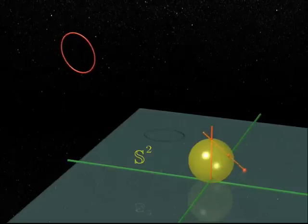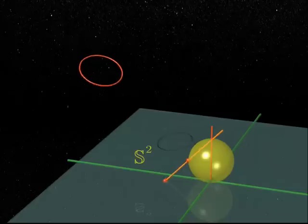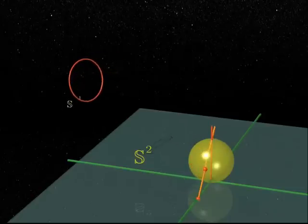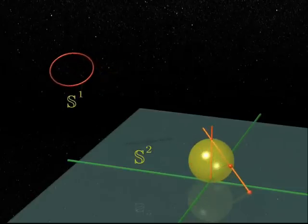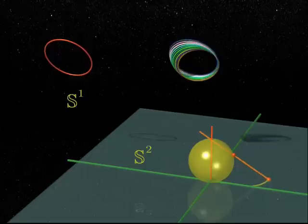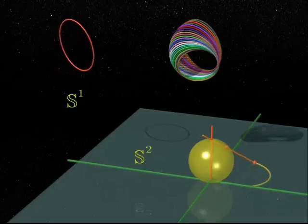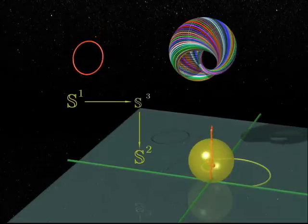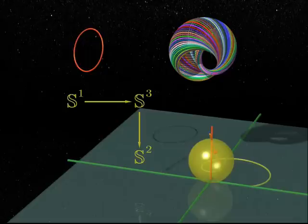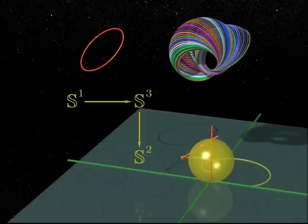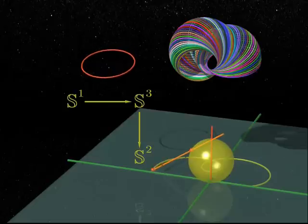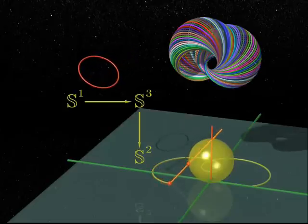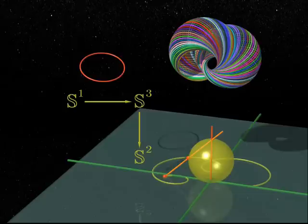So the complex lines that interest us are described by points on the yellow sphere, the two-dimensional sphere S2. So we have a circle for each point on the two-sphere. But a circle is a sphere of dimension one, isn't it? All these circles fill up the three-sphere. Each point on the three-sphere belongs to a single circle, and therefore defines a point on the two-sphere.